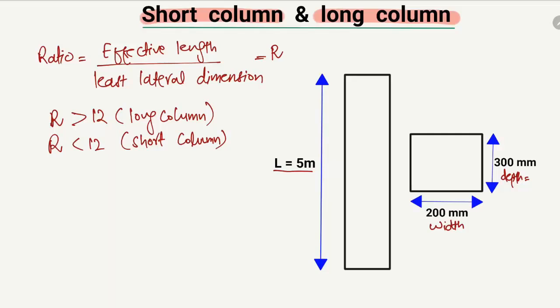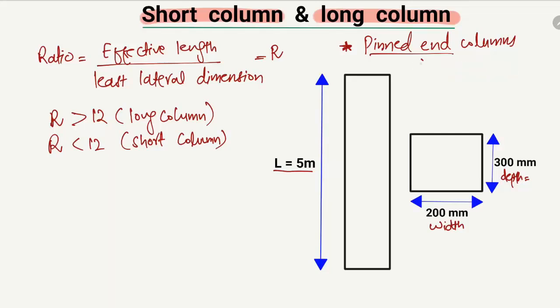Now I will explain this ratio with the help of our example. The column length is 5 meters and let's suppose this is a pin-pin column. There are different types of columns: pin-pin column, fixed-end column, and continuous column. In a pin-pin column, the effective length Le is equal to the full length L of the column. In a fixed-end column, the effective length is equal to 0.5 times L. In our case we have a pin-pin column, so the effective length equals 5 meters.